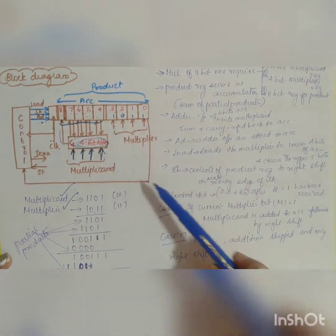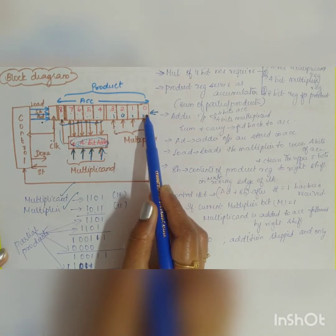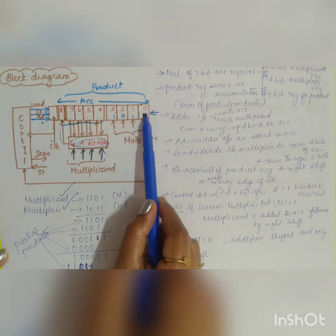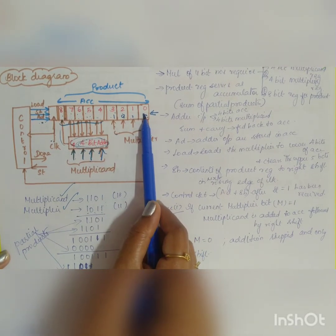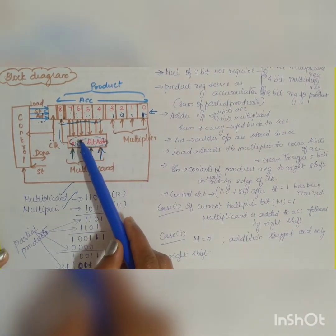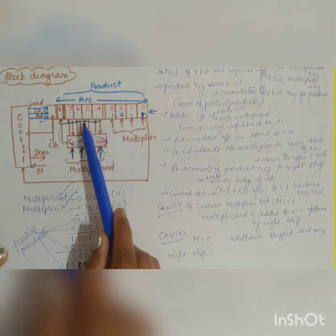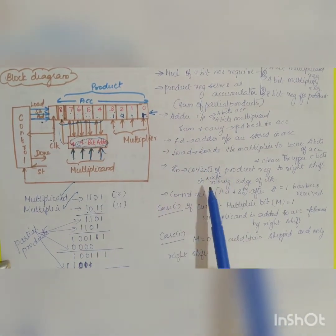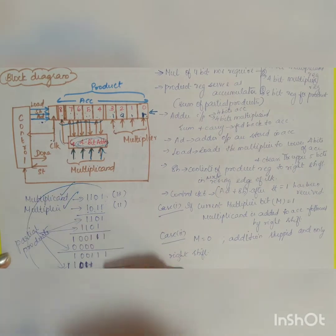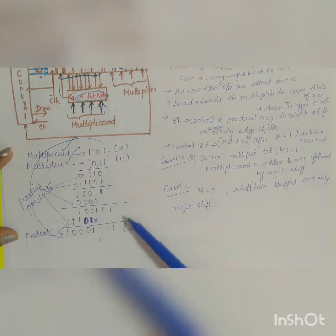In operation, the multiplier bit m is checked. If m = 1, both the add operation and the shift operation are performed — addition first, then shift. If m = 0, the add signal is skipped and only the shift operation is performed. These two cases determine how the product is generated. Using the example 1101 × 1011, the final product will be 143, stored in the accumulator.